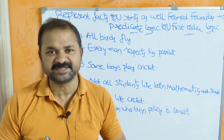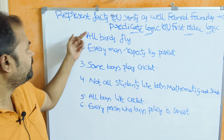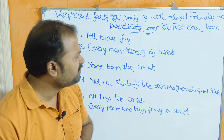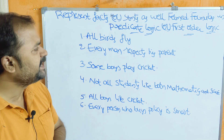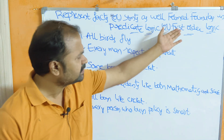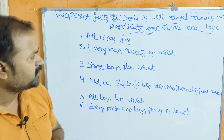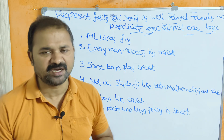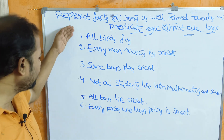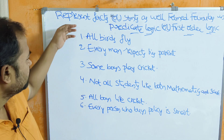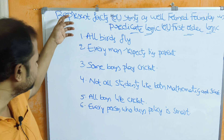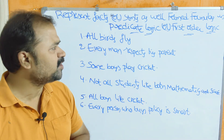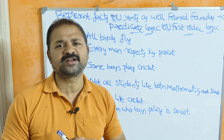Let us see this problem: represent the facts or statements as well-formed formulas in predicate logic, also called first order predicate logic or FOL, first order logic. Totally we have six statements, and we have to represent these six statements with the help of predicate logic or first order logic.